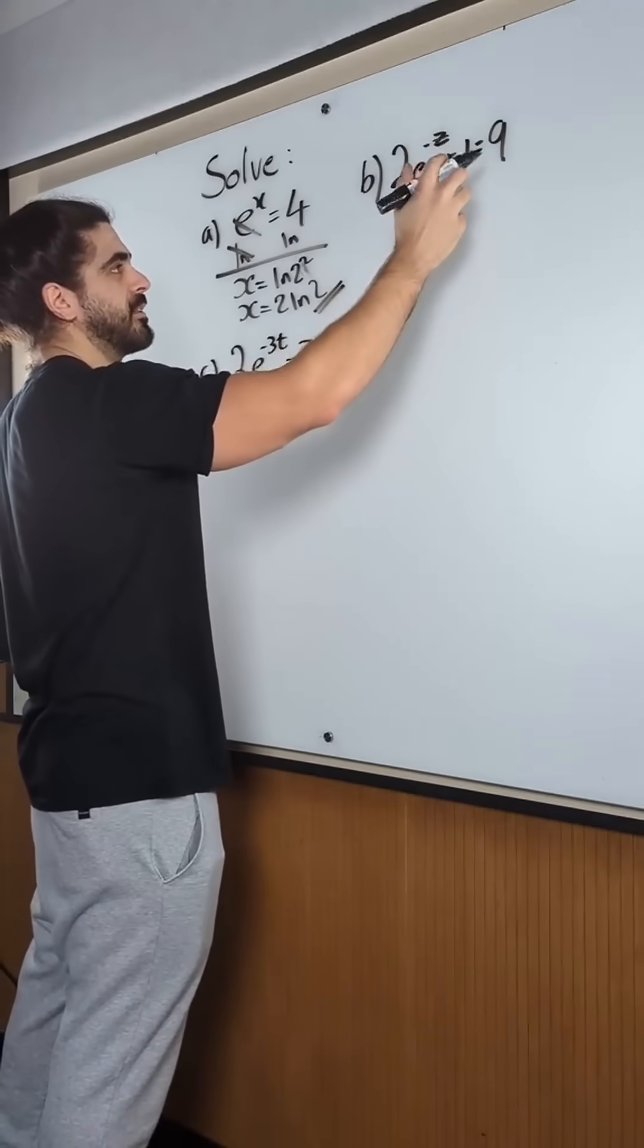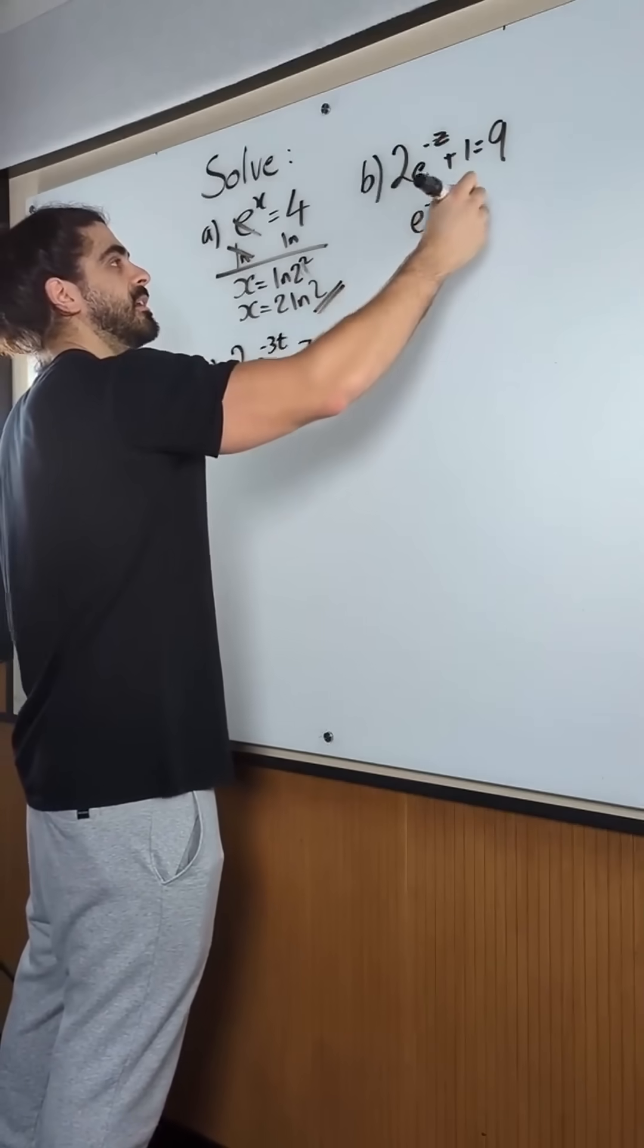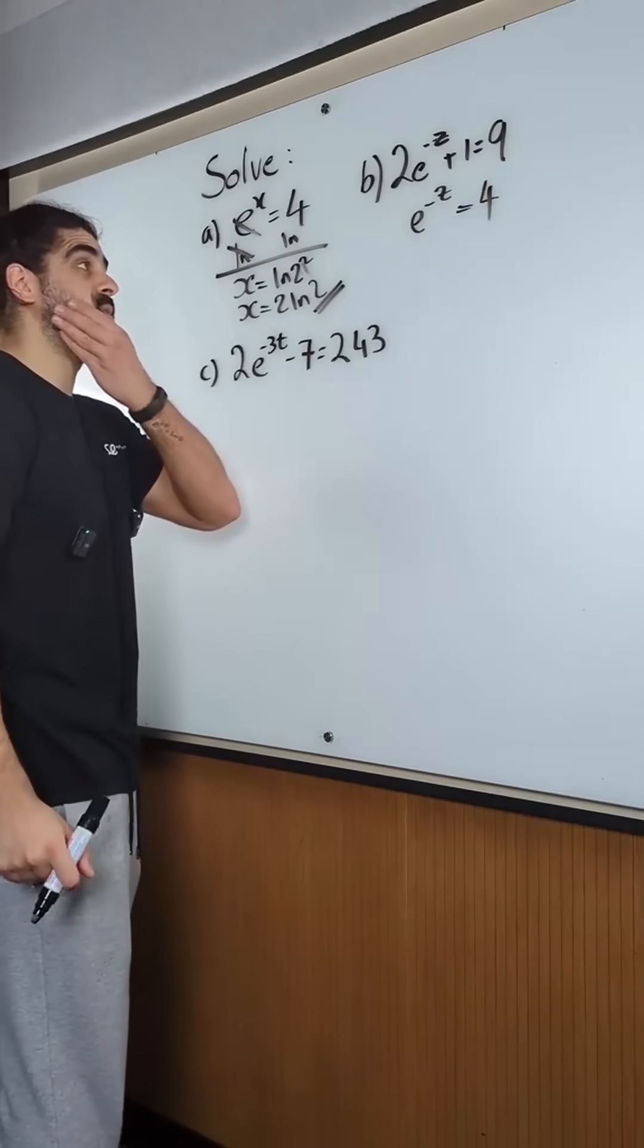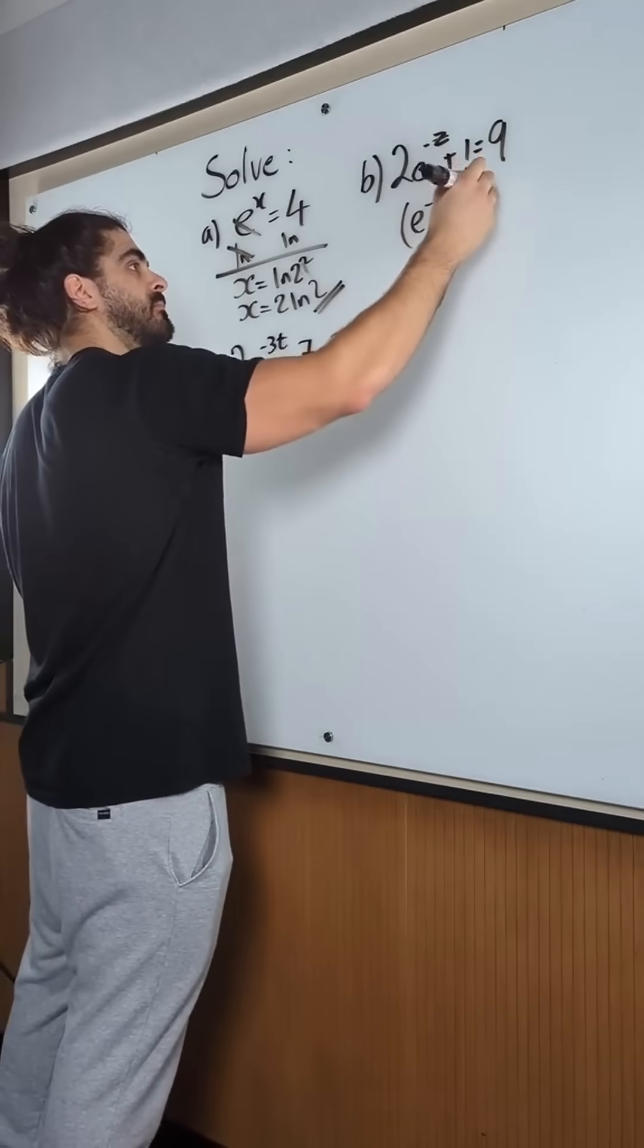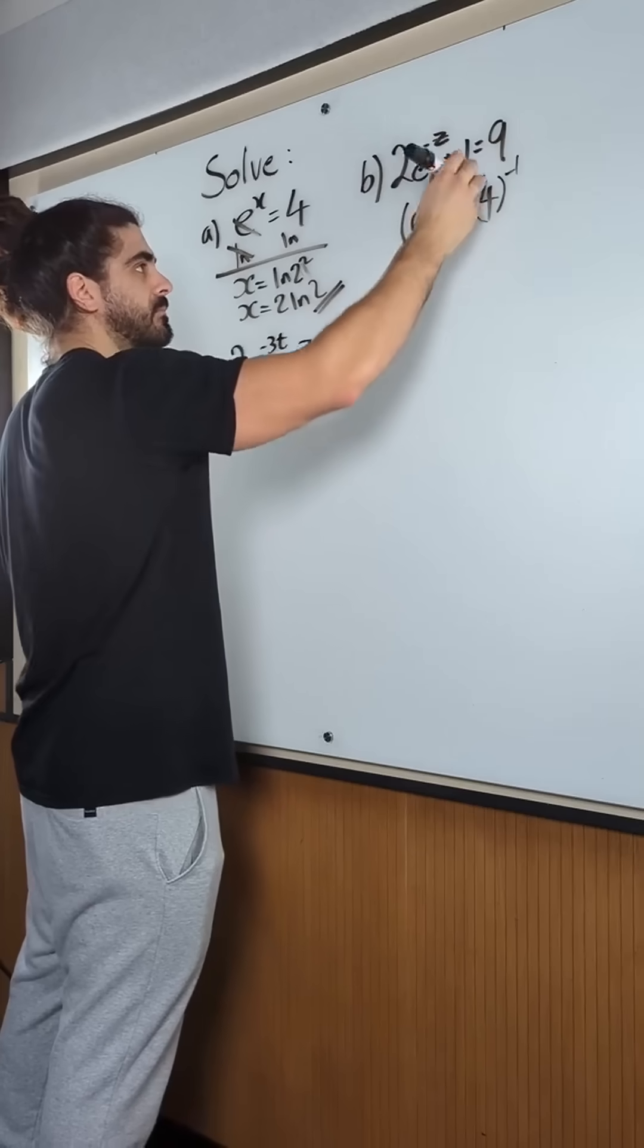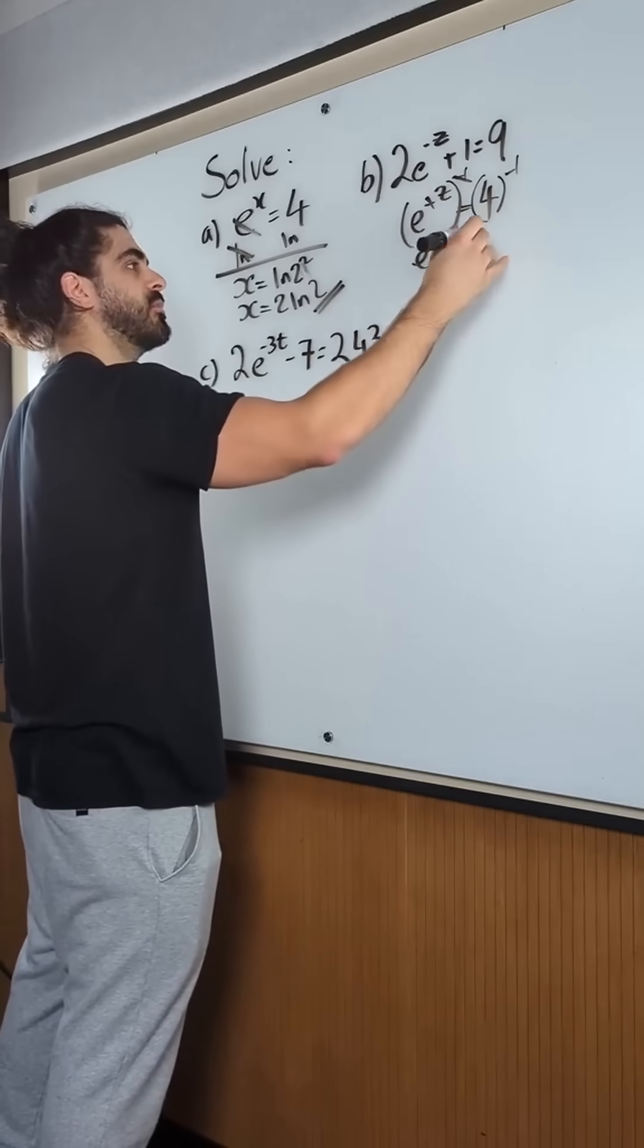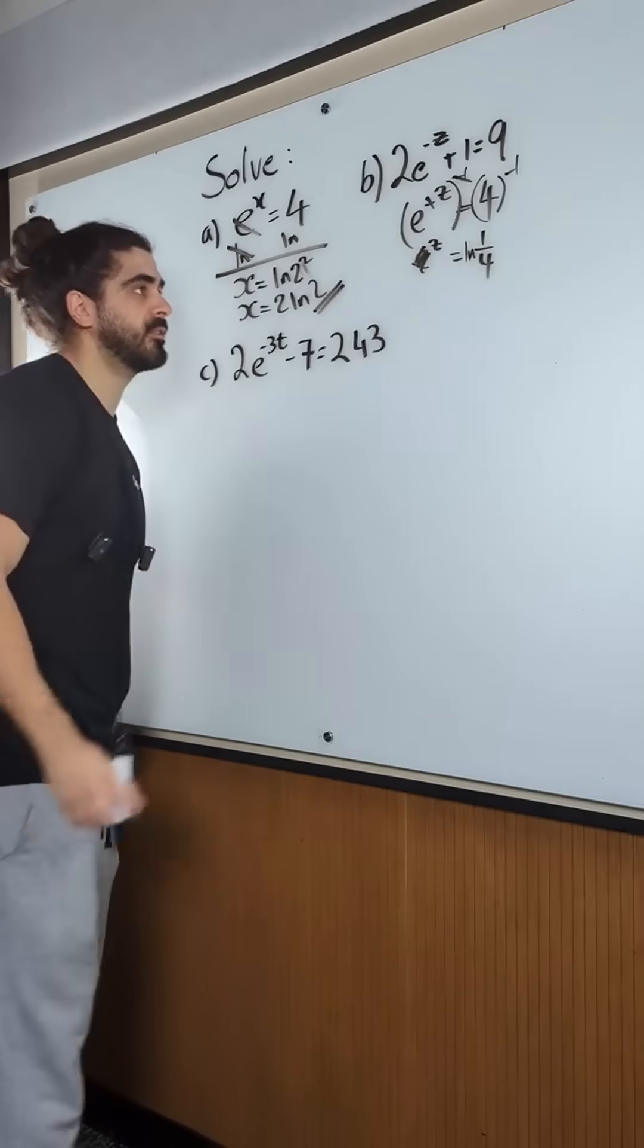Here, minus 1 from both sides divided by 2. 9 minus 1 is 8 divided by 2 is 4, right? Then you want to reciprocate both sides because to get rid of minus, you're just doing power minus 1. Boom. So you have e to the power of z equals 4 to the minus 1, which is a quarter. Then you take the natural log of both sides. Z is ln of a quarter.